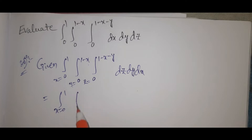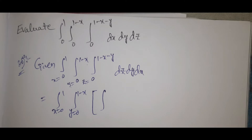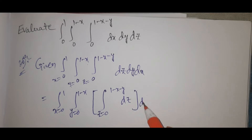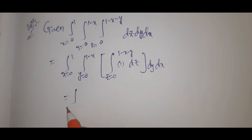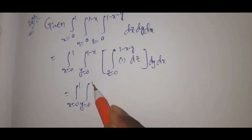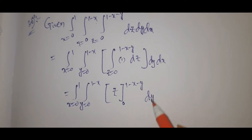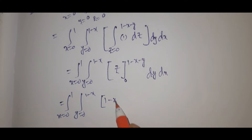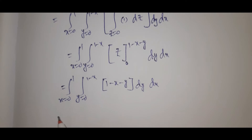x equals 0 to 1, y equals 0 to 1 minus x, integral 0 to 1 minus x minus y dz dy dx. Integral 1 dz: z is equal to 0 to 1 minus x minus y. So the result is 1 minus x minus y. y is equal to 0 to 1 minus x, dy dx.